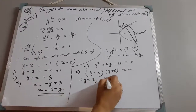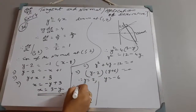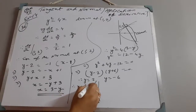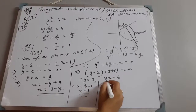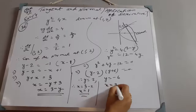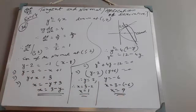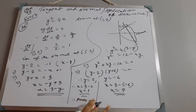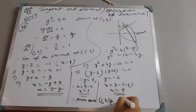When y = 2, x = 3 − 2 = 1. When y = −6, x = 3 − (−6) = 9. Therefore, the two points where the normal intersects the parabola are (1, 2) and (9, −6). The point (1, 2) is the original point of contact, and (9, −6) is the other end of the normal chord.